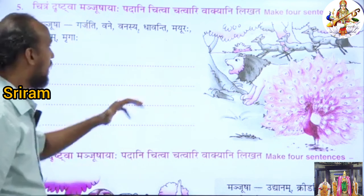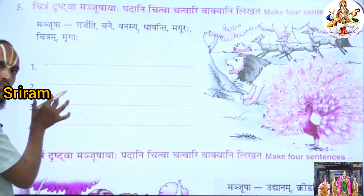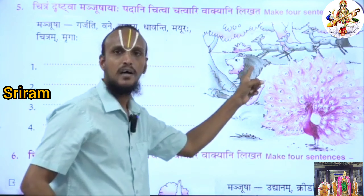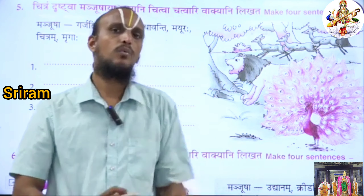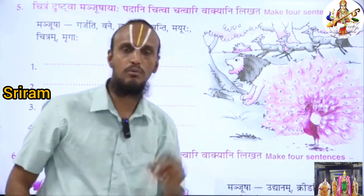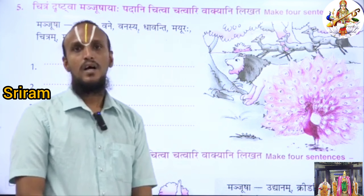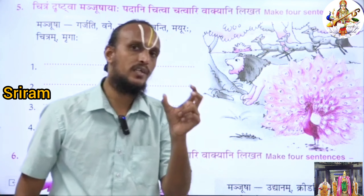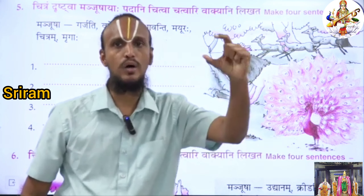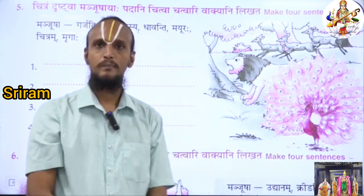For example: 'Asmin chitre' is a common phrase we can use in Chitralekhanam. Since there is only one lion in this picture, you can write one more adjective to describe the noun: 'Asmin chitre yekaha simhaha asti.' Listen carefully, children — if you add adjectives, your sentence will be so strong and the teacher will easily give you full marks. Will you do this? Good children. Thank you so much.